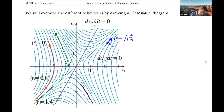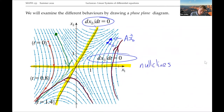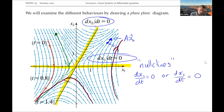If I pick different starting points, I can follow trajectories by following those arrows in different directions. There are two important lines drawn on the phase plane: where dx2/dt equals zero and where dx1/dt equals zero. These are known as nullclines, and they're really important for phase plane diagrams. A nullcline occurs when either dx1/dt equals zero or dx2/dt equals zero.